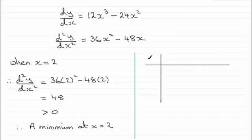I would take my point x. We know that it's got a stationary point when x equals two. I'll take a point to the left and a point to the right. So let's say we take x equals one and x equals three.